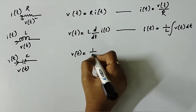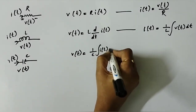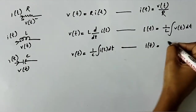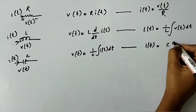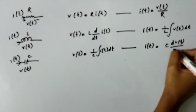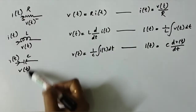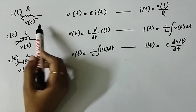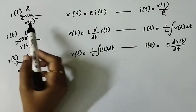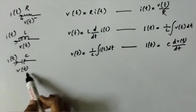For a capacitor, I(t) = C · dV(t)/dt. So we need to know the voltage and current relationships for the elements R, L, and C.